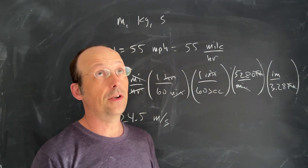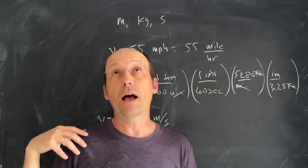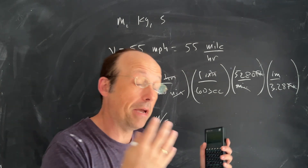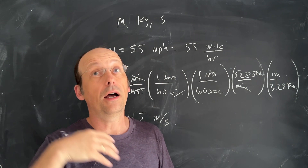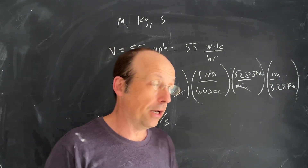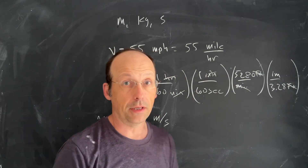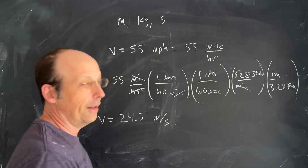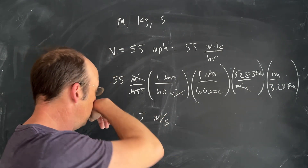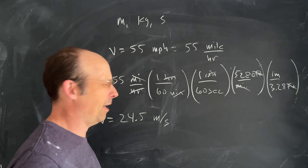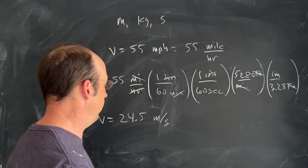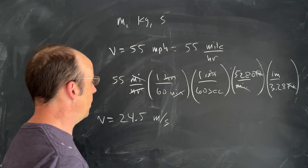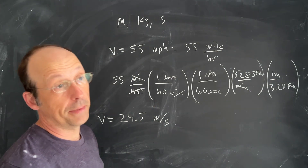There's a section in the book about significant figures — that's more important when making experimental measurements. Here, more digits is better but don't go overboard. If I rounded to just 20 that'd be too rough; 24.5 is fine. So 55 miles per hour equals 24.5 meters per second.